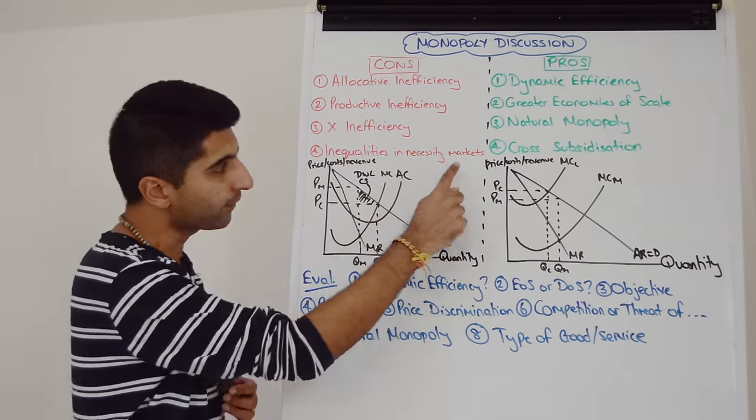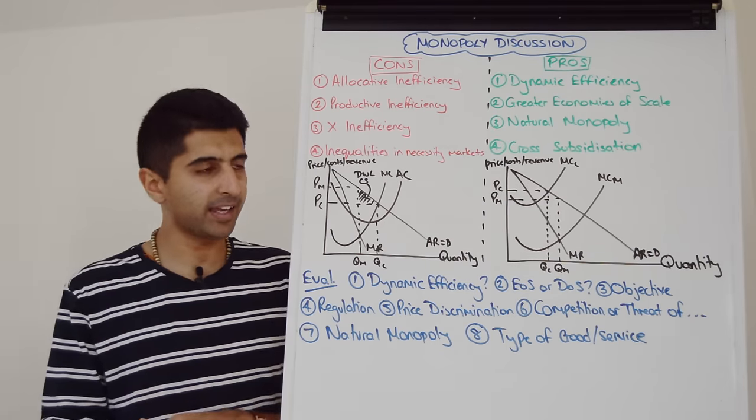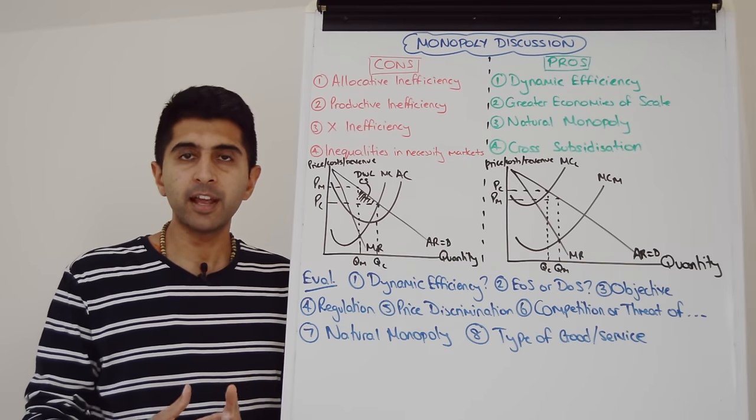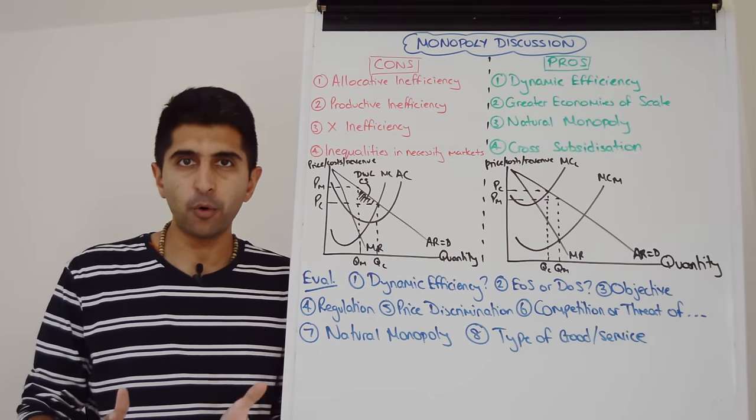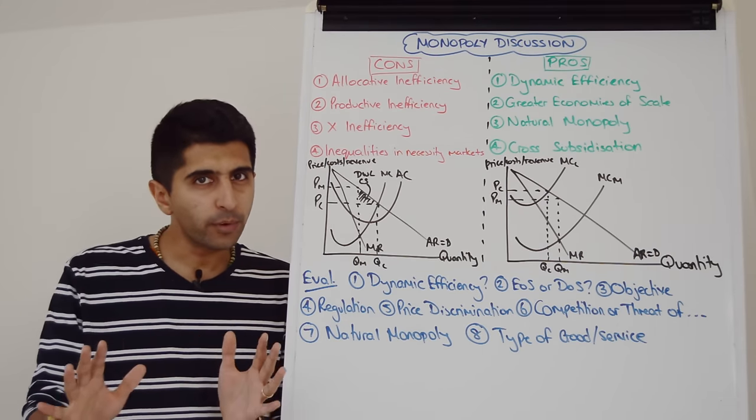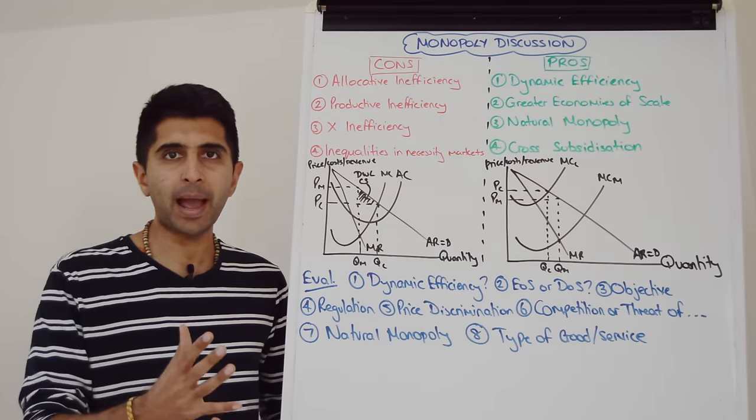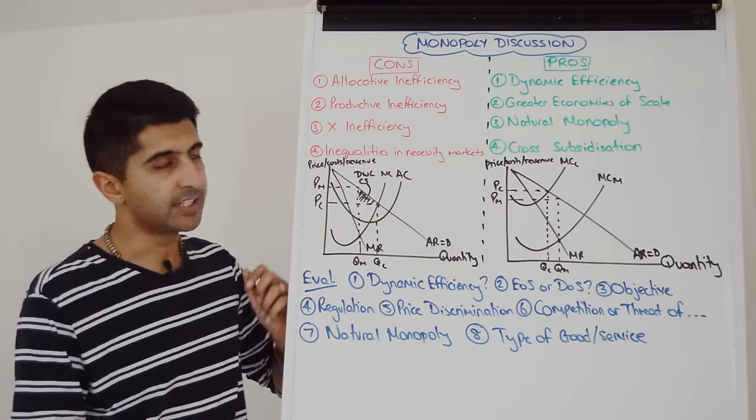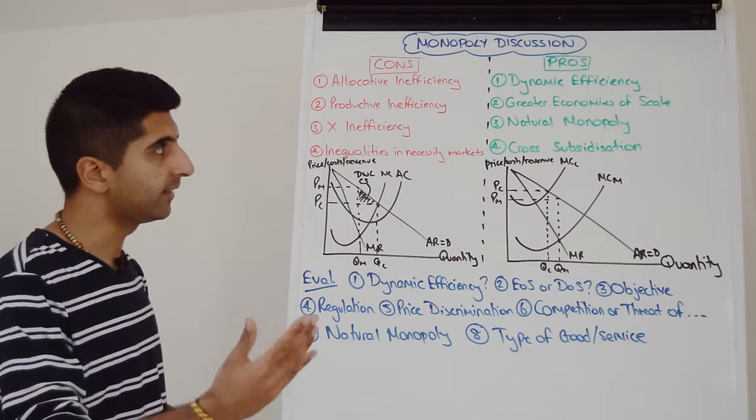But we could also bring in the idea that monopolies can cause inequalities, especially in necessity markets. Because of these higher prices, the poor could suffer the most if monopolies are focused more in necessity markets like groceries, for example, food and drink. We do not want to see monopolies there. That would be a very bad thing for those on the lower incomes in society and that would lead to quite wide income inequalities in society.